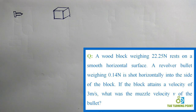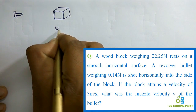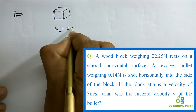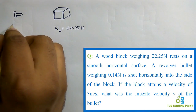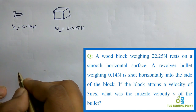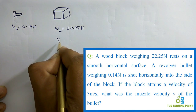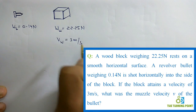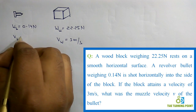There are two things here: one is the wooden block and another one is the bullet. The weight of the wooden block W_W is given as 22.25N, and weight of the bullet is given as 0.14N. The velocity of the block is given as 3 meters per second, and the muzzle velocity V of the bullet is what we need to calculate.